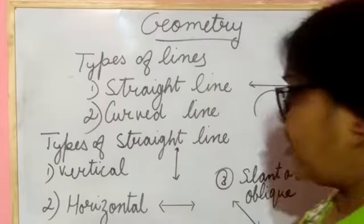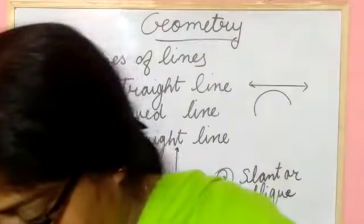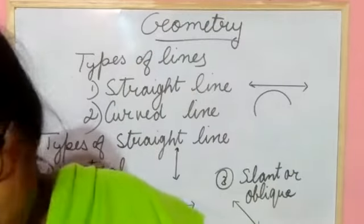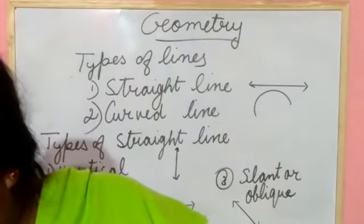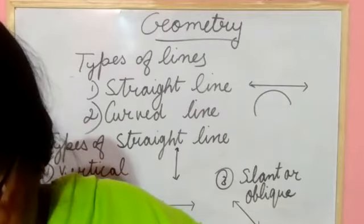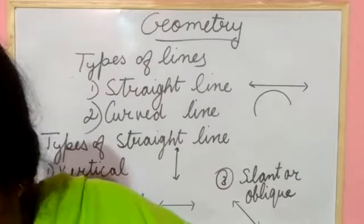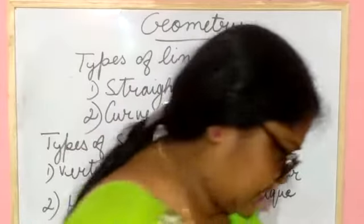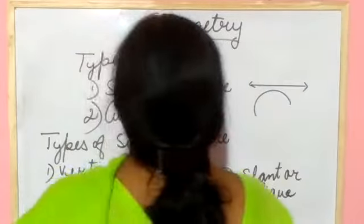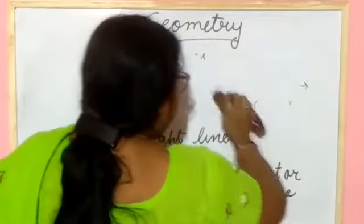Now you will see what is the parallel line and intersecting line. I will show you about parallel line and intersecting line. I can rub the two types of line — straight line and curved line — from the board now.